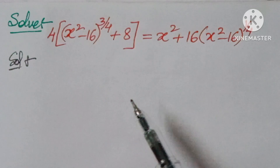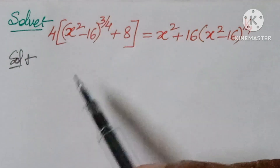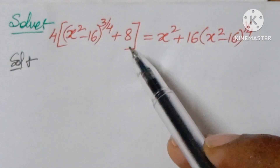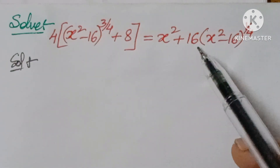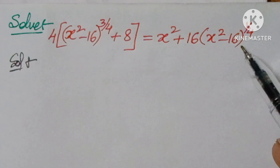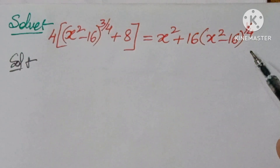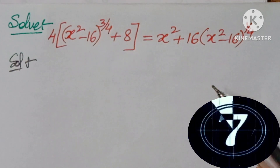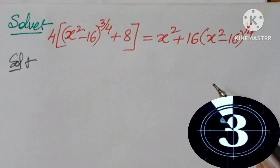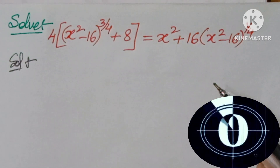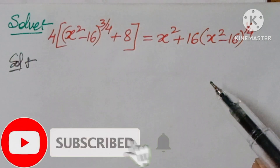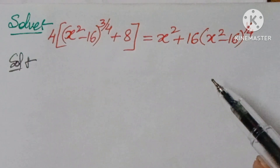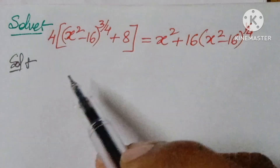Hello, welcome back to NCG Max. Today we're looking at a logical problem. The question is: solve 4 into (x squared minus 16) to the power of 3/4 plus 8 equals (x squared plus 16) into (x squared minus 16) to the power of 1/4. Pause the video for 10 seconds and try it. If you are new to the channel, please subscribe and give it a thumbs up. More than 500 olympiad and logical problems are uploaded on this channel.